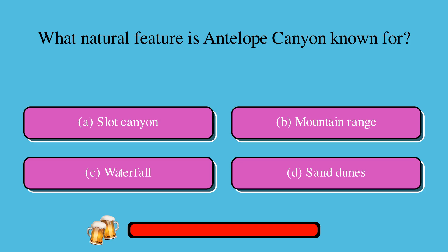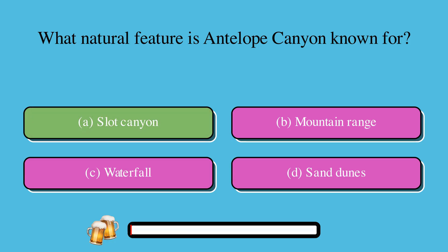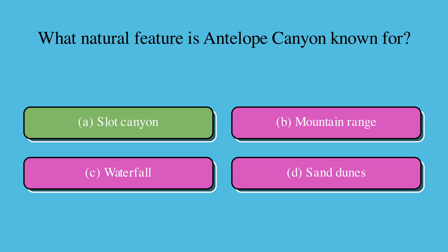What natural feature is Antelope Canyon known for? A. Slot Canyon, or B. Mountain Range, or C. Waterfall, or D. Sand Dunes? The correct answer is A. Slot Canyon.